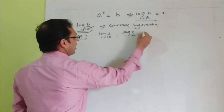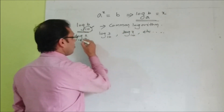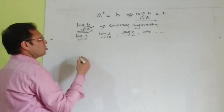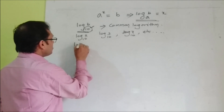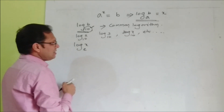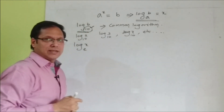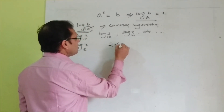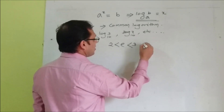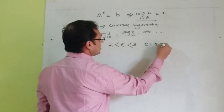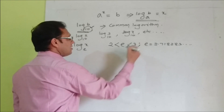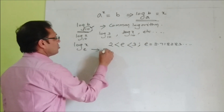In case of natural logarithm, we have log x to the base e. What is e? It is one of the exponential constants, which lies in between 2 and 3. The value of e is equal to 2.718283 and so on. This is called natural logarithm.